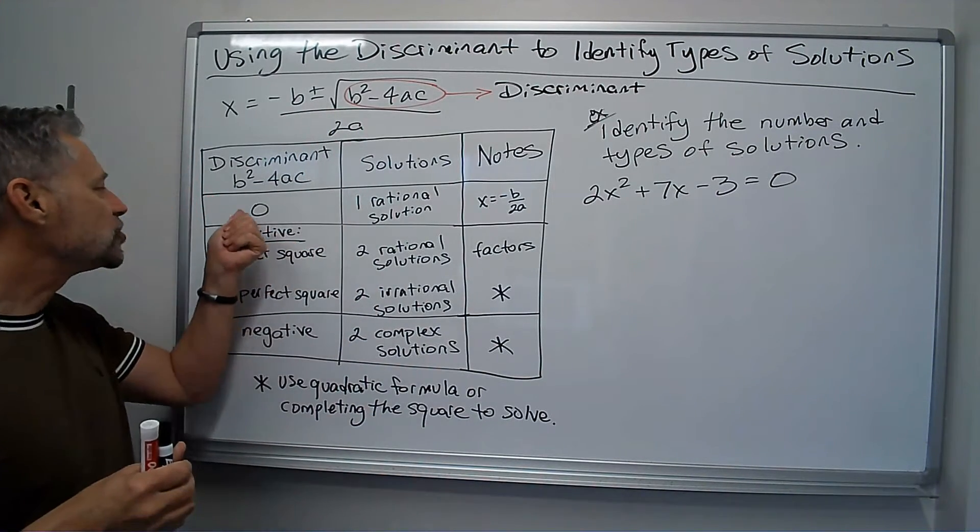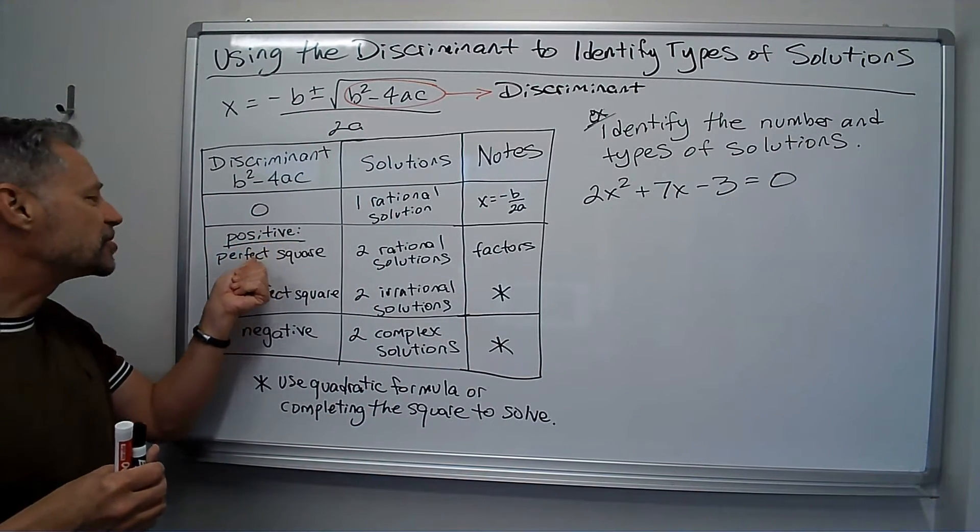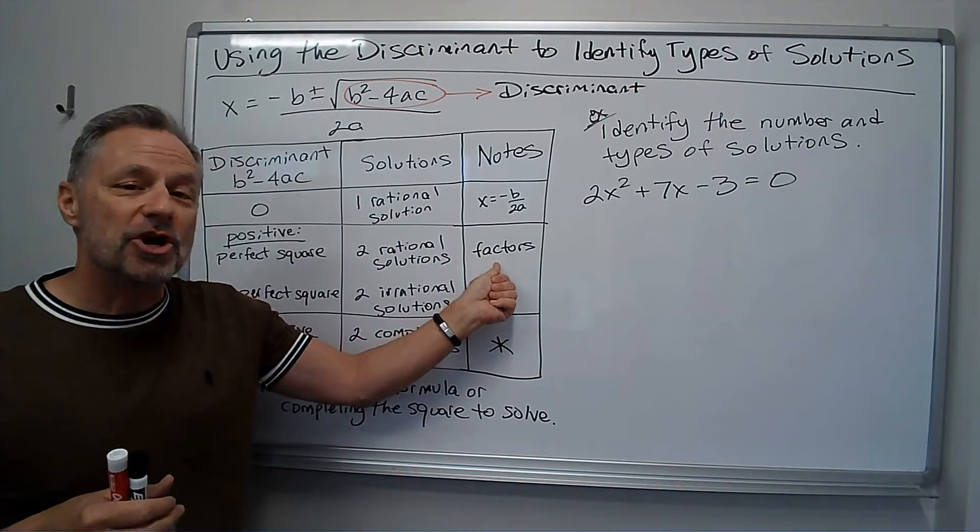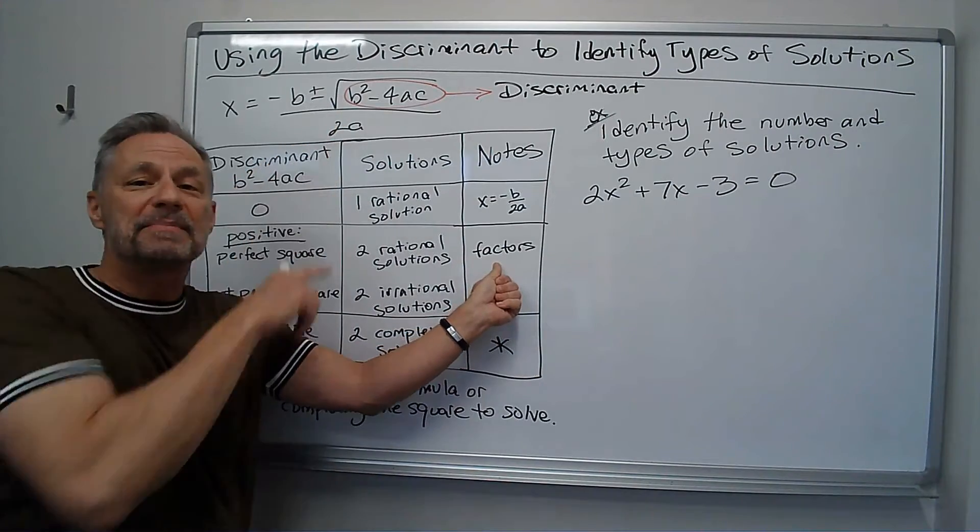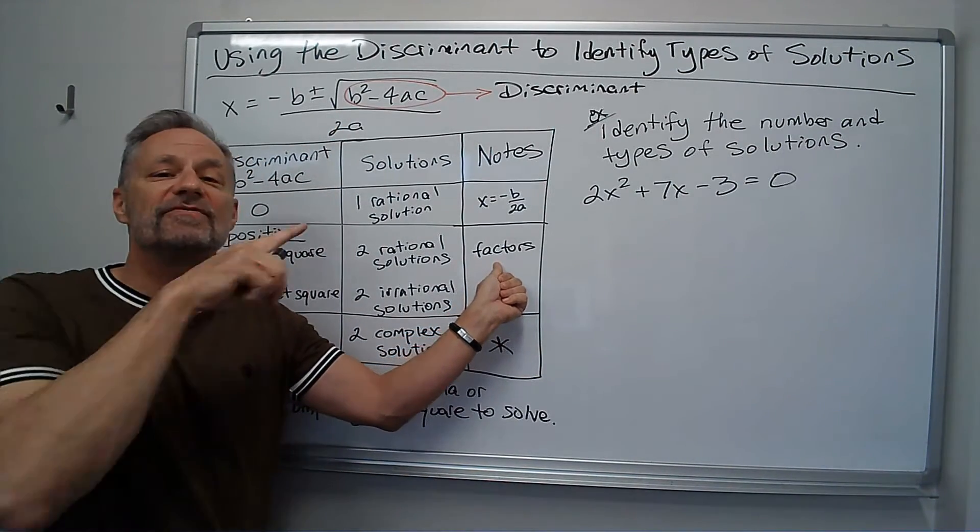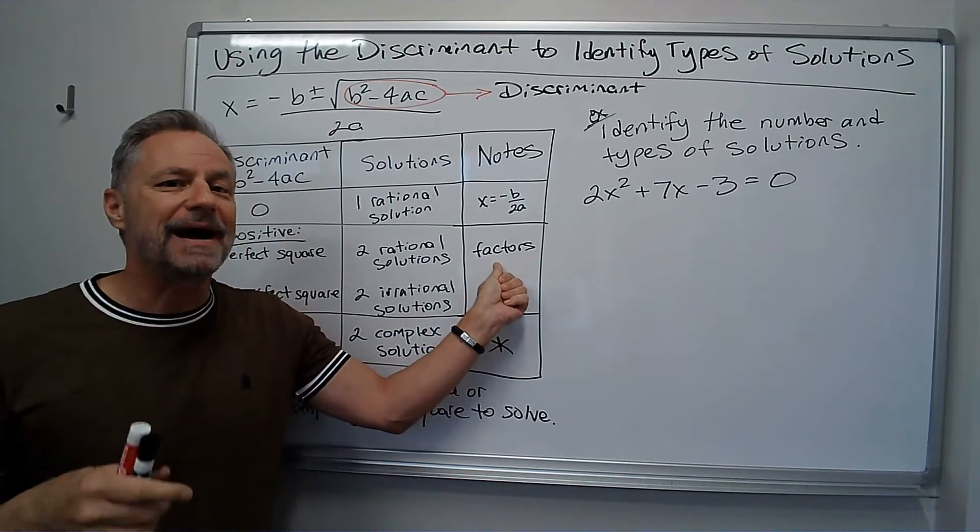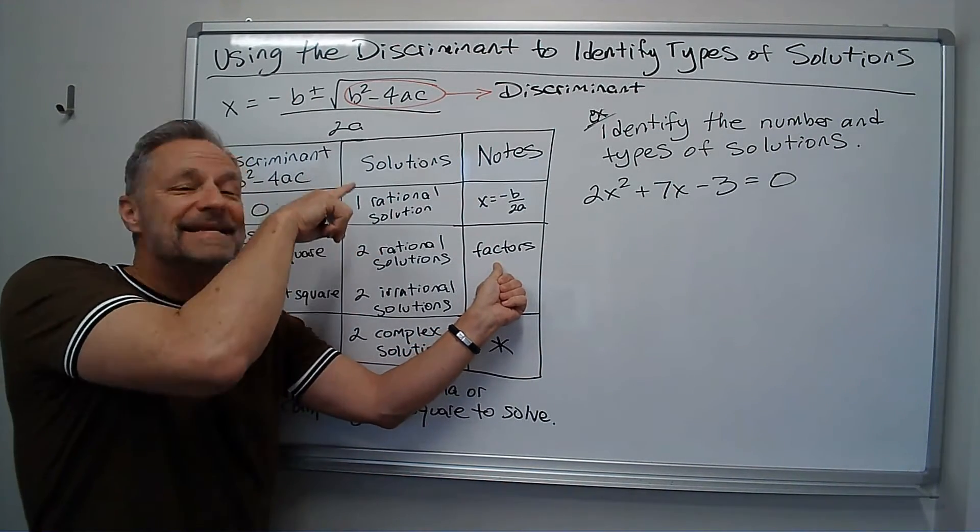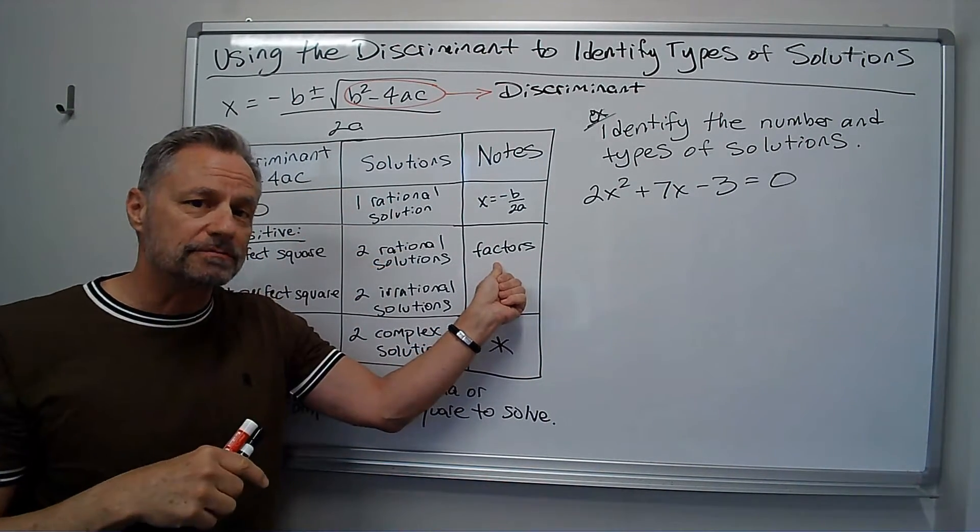They're both rational numbers because the square root has disappeared once I took the square root. So if I get a positive discriminant and it's a perfect square, I get two rational solutions. Now, I put a note here. If that happens and that was a perfect square, I could have factored the original problem. I didn't have to do anything else in order to solve, but it's going to be factorable. It factors.